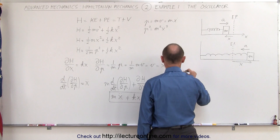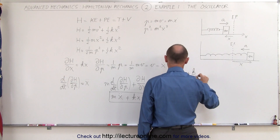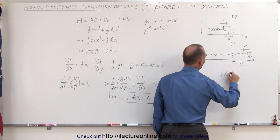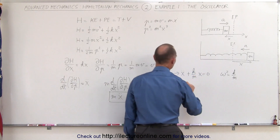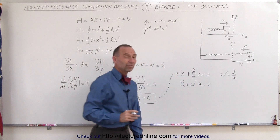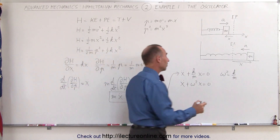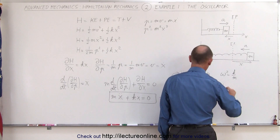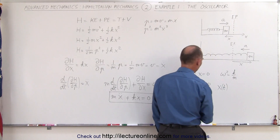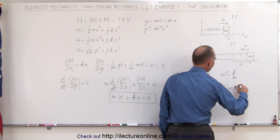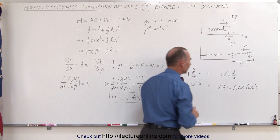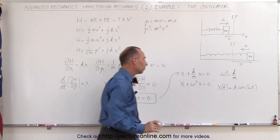We can rewrite this as ẍ plus k over m times x equals 0. When we say that ω² is equal to k over m, we can then say that ẍ plus ω²x equals 0. If we want to write the solution, x as a function of t — since omega is a constant — that would be equal to the amplitude times the cosine of ωt. That would be the equation of oscillation coming out of this differential equation.